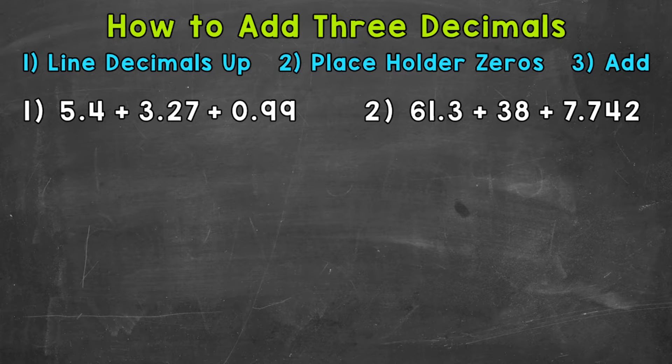Let's jump into our examples and start with number one, where we have 5.4 + 3.27 + 0.99. So the first thing we need to do when we set this up is line our decimals up. So 5.4, then we have 3.27, and then 0.99.